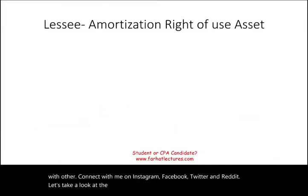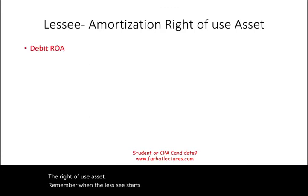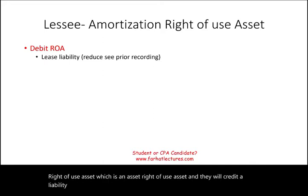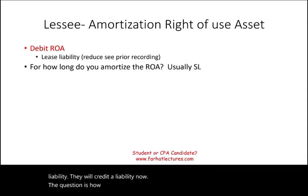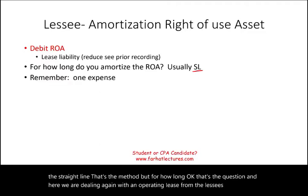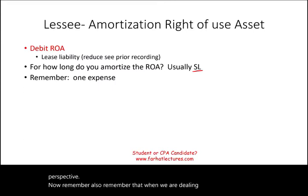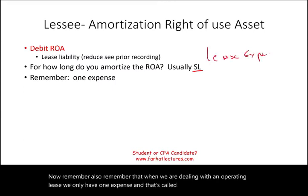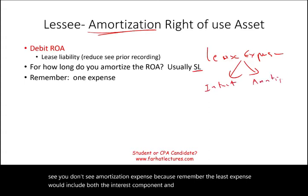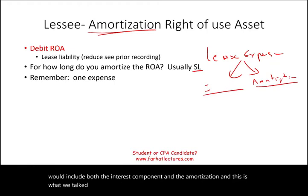Now let's take a look at the lessee. The lessee will have amortization of the right-of-use asset. When the lessee commences the lease, they will debit the right-of-use asset and credit a lease liability. When dealing with an operating lease from the lessee's perspective, we only have one expense called lease expense. You don't see a separate amortization expense because the lease expense includes both the interest component and the amortization combined — it's one single expense.